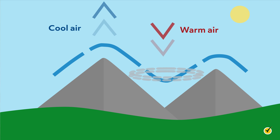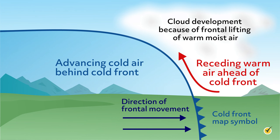The last air lifting process we'll talk about is lifting along weather fronts. A cold front is simply the boundary of a moving mass of cold air. The leading edge of a cold front has a very steep slope that cuts through the air ahead of the front. As the cold front moves along, the lingering warm air ahead is rapidly pushed upward, generating towering clouds that often produce severe thunderstorms. Cold air is more dense, which is why it can push the less dense warm air upward.